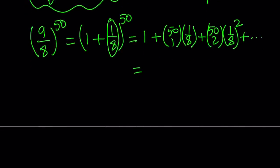So what is this? 50 choose 1 is 50 because n choose 1 is always n. Multiply by 1/8, this is going to be 50 over 8, which you can write as 25 over 4, which is about 6.25.